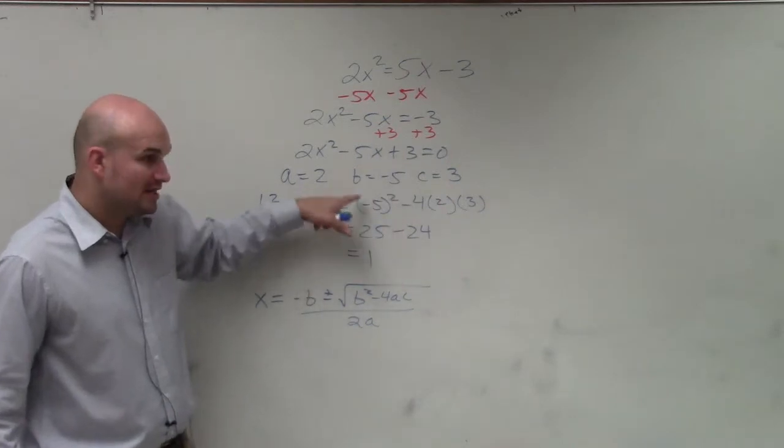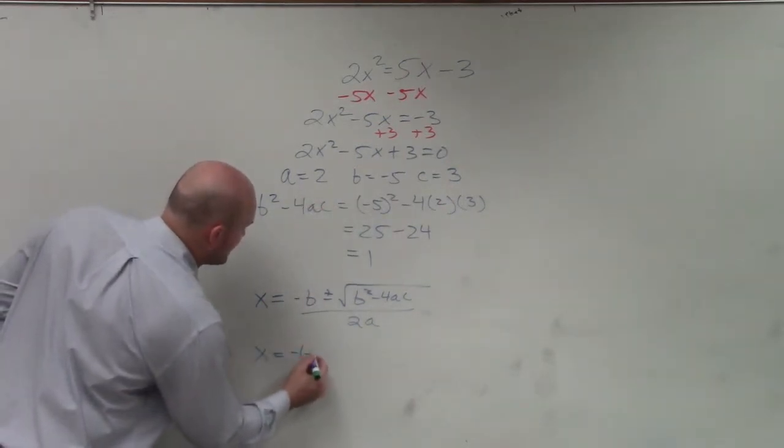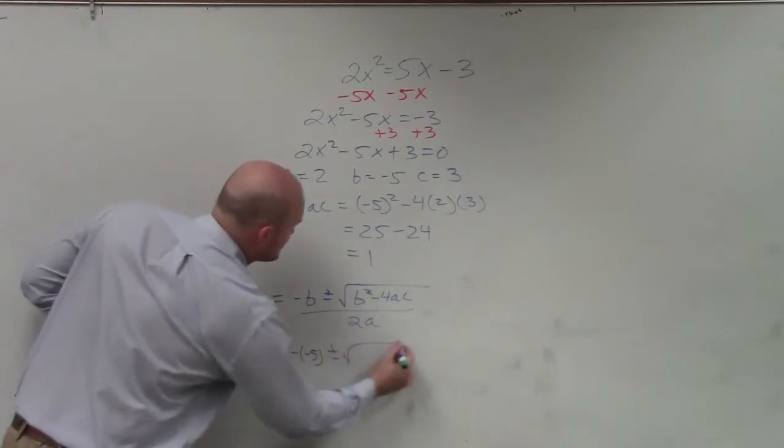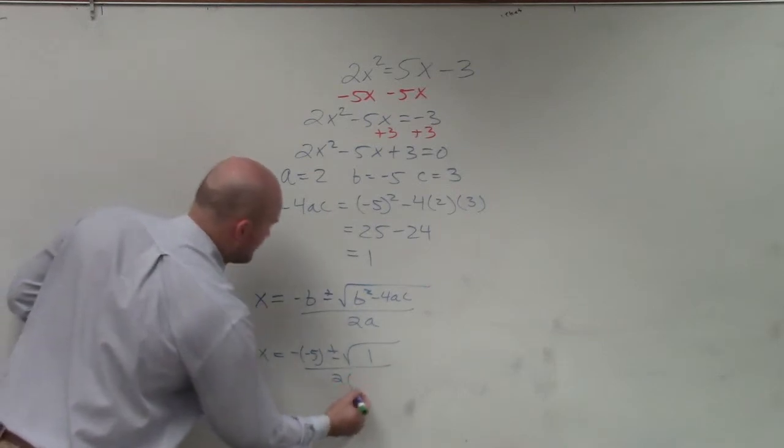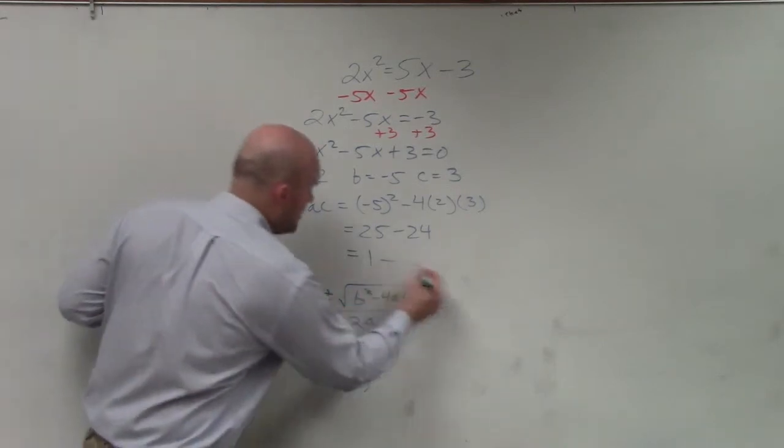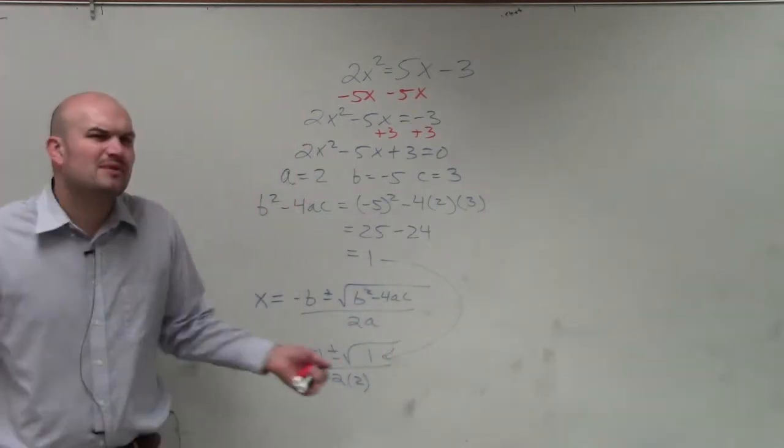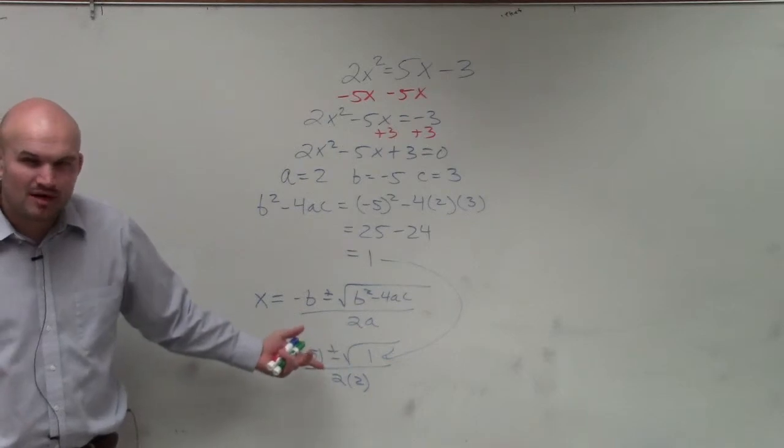So now I plug in all of my terms. So I have x equals opposite of negative 5 plus or minus the square root of 1 divided by 2 times 2. Does everybody see how this 1 went right there? That's why I like to find the discriminant first, because whatever that value is, it's still part of the quadratic formula.